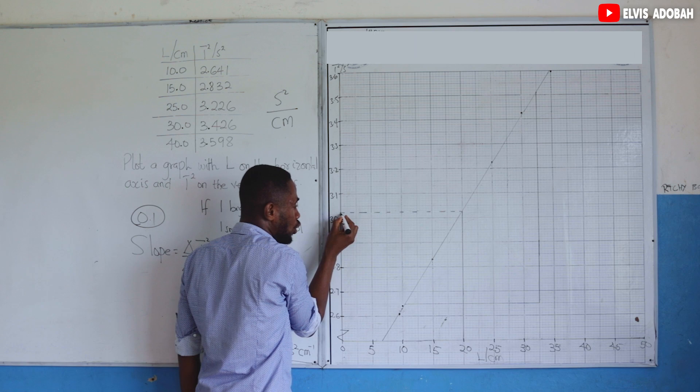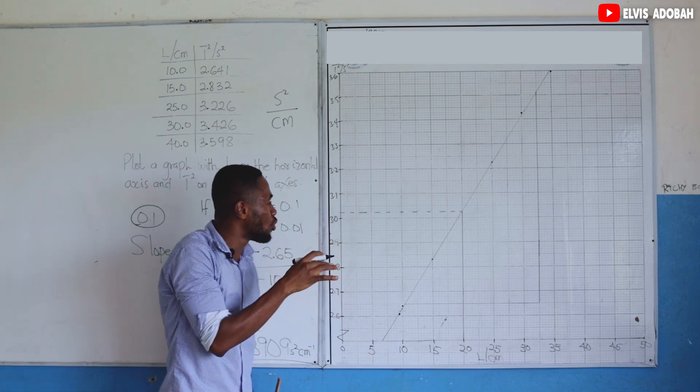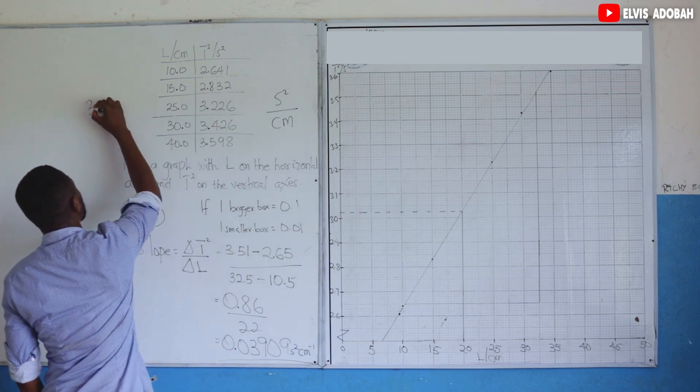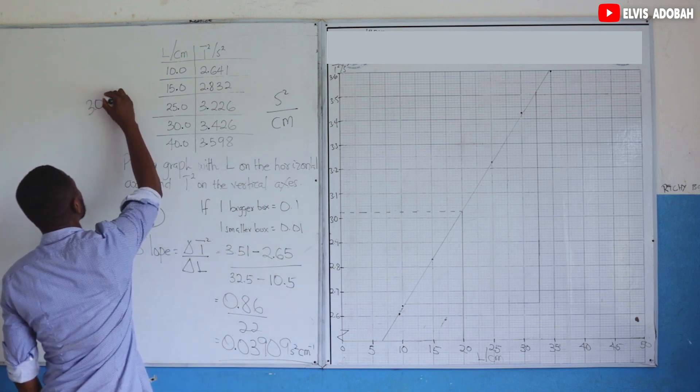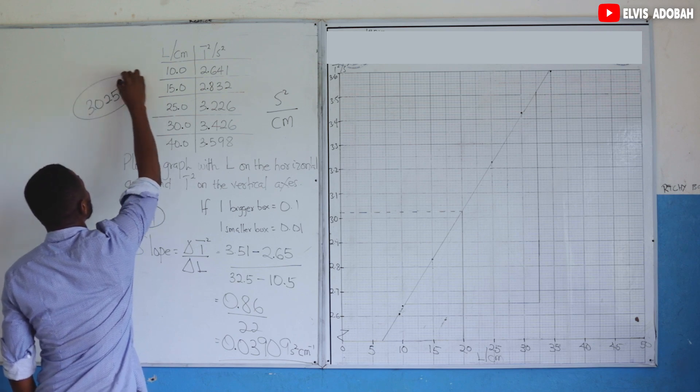3.02, 3.03. But it is in between 3.02 and 3.03. So that would be 3.025, then the unit is second squared.